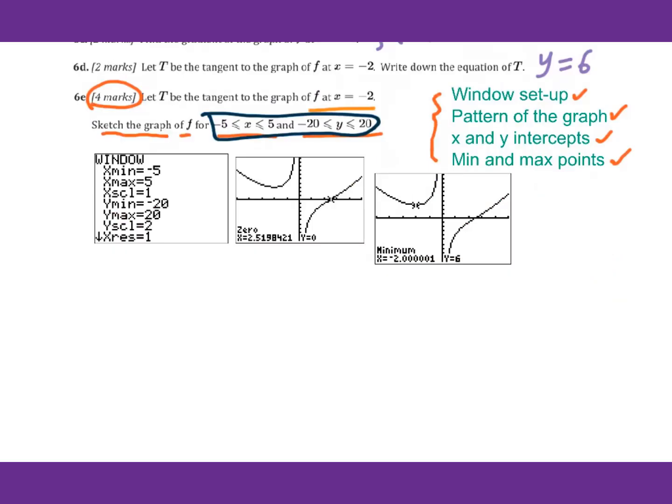First of all, you need to put it into your graphing calculator window exactly as given. Then for y minimum, this negative 20 to 20, I put the scale as 2. You can put the scale as 5 or 4 — it's really up to you.